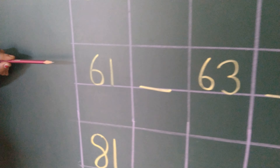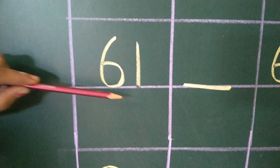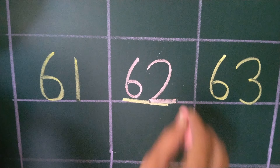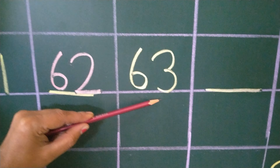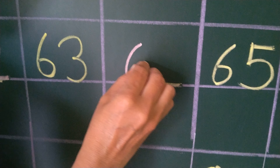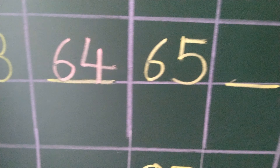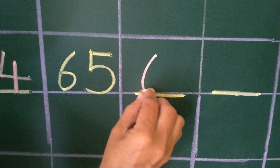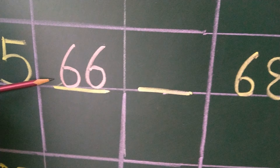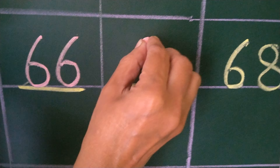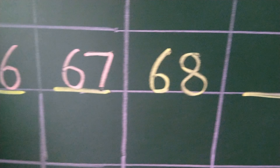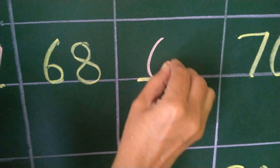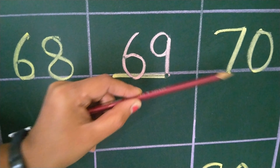Now next line. See student, which number is this? This is 61. After 61, which number comes? 62. The next number is 63. After 63, which number comes? 64. The next number is 65. After 65, which number comes? 66. After 66, which number comes? 67. After 67, which number comes? 68. After 68, which number comes? 69. And last number is 70.